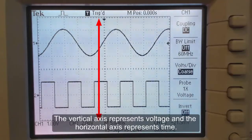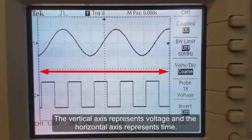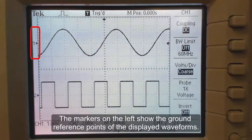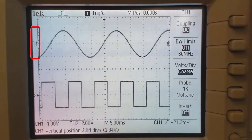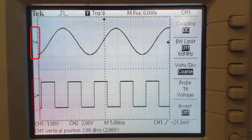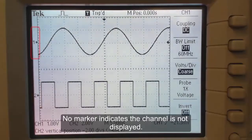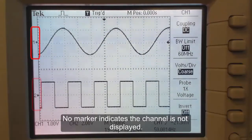The vertical axis represents voltage and the horizontal axis represents time. The markers on the left show the ground reference points of the displayed waveforms. No marker indicates the channel is not displayed.